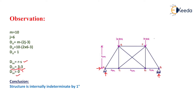Since the total external static indeterminacy is 0, we now need to find the internal static indeterminacy. Its formula is M minus 2j minus 3. In this truss the total members M are 10 and the total number of joints j is 6. After substituting these values, the internal static indeterminacy equals 1. The structure is internally indeterminate by 1 degree, so this is an indeterminate truss.